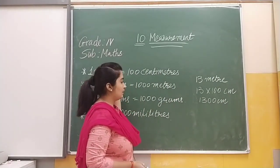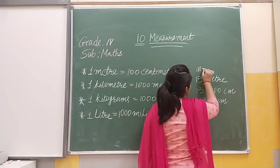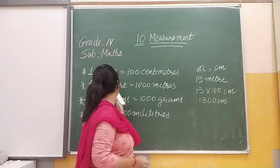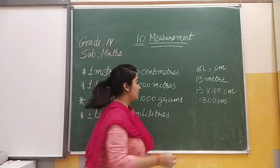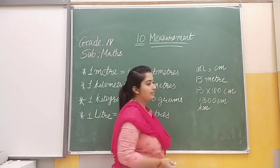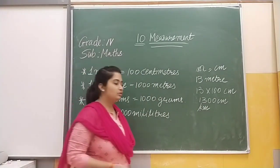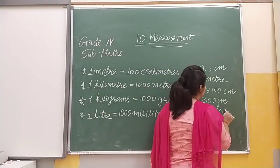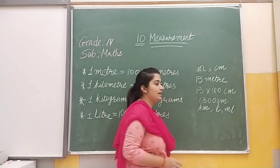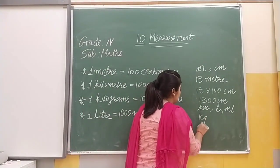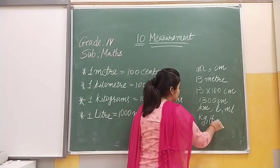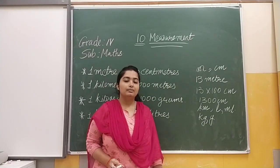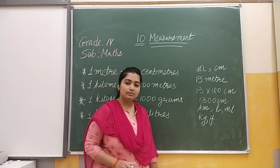Here, the symbol for meter is M. If centimeter is given, we can write CM. If kilometers is given, we can write KM. The symbol for liter is L, and milliliter is ML. If kilograms is given, we can write KG, and for grams we write G. These are the short forms of our measurement terms: kilograms, grams, meters, kilometer, centimeter, liter, and milliliter.